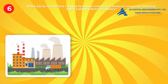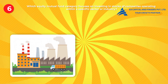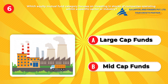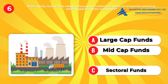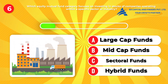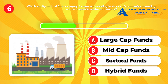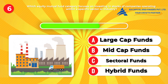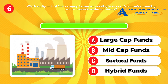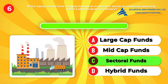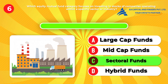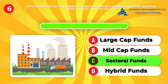Question six: Which equity mutual fund category focuses on investing in stocks of companies operating within a specific sector or industry? A, large cap funds. B, mid cap funds. C, sectoral funds. D, hybrid funds. Answer: C, sectoral funds. These funds offer targeted exposure to particular sectors, allowing investors to capitalize on growth opportunities within specific industries.